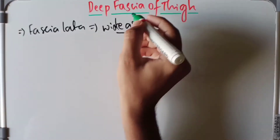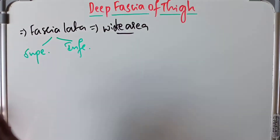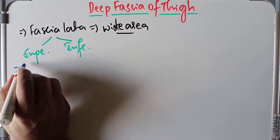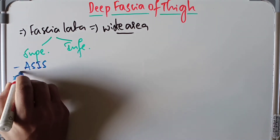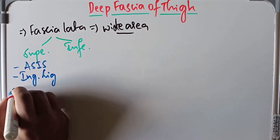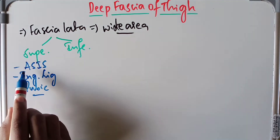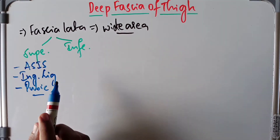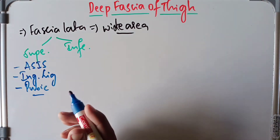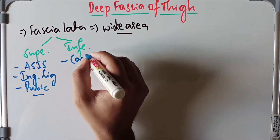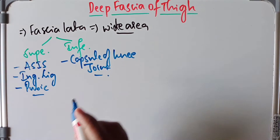What are the attachments of the fascia lata? We have superior and inferior attachments. Superiorly, it is attached to the ASIS — that is the anterior superior iliac spine of the hip — and also to the inguinal ligament, then to the pubic tubercle. Inferiorly, it is attached to the subcutaneous bony prominences and the capsule of the knee joint.